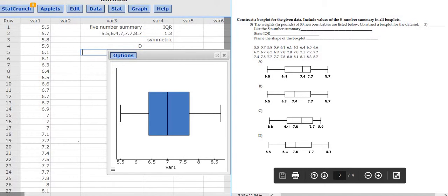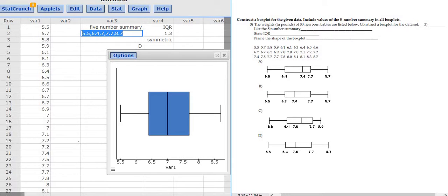So the other ones are all very close, but D is the only one that matches the five number summary, right? 5.5, 6.4, 7, 7.7, and 8.7.